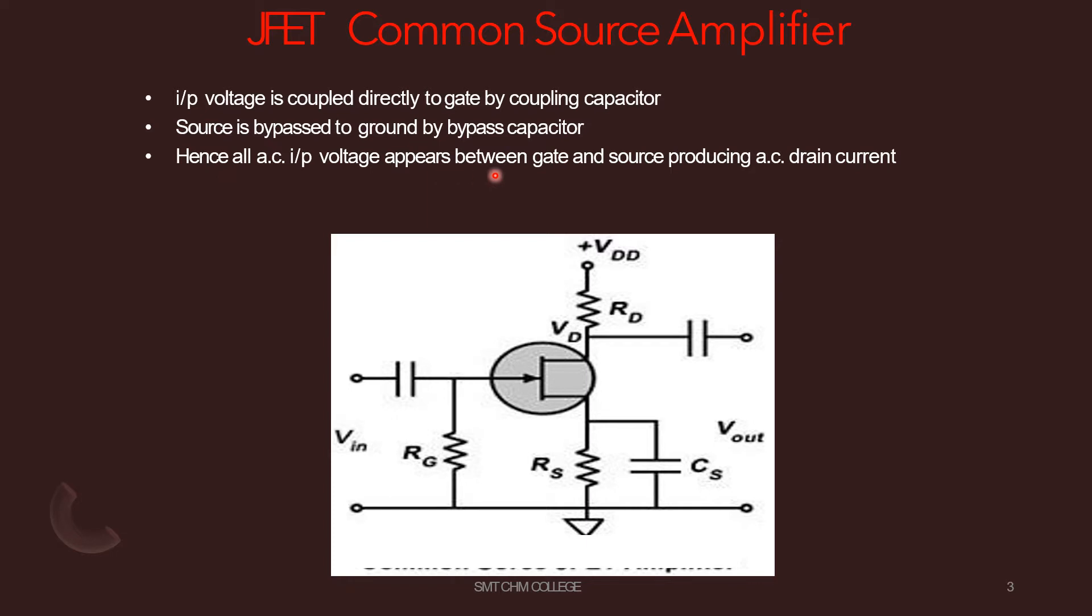All the AC input voltage appears between the gate and the source producing AC drain current. Since this AC current flows through drain resistor, it is amplified and inverted at the output. The output signal is then coupled to the load resistor RL which is not shown in the diagram.